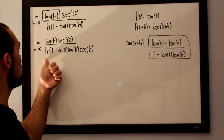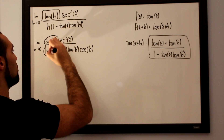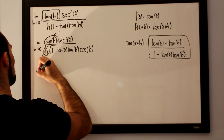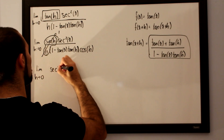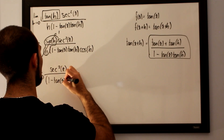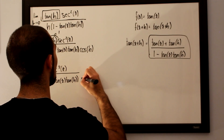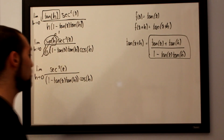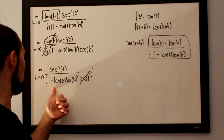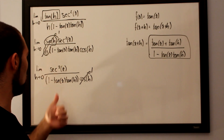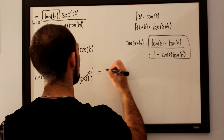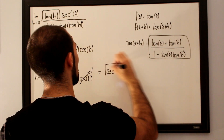Taking the limit as h approaches 0, I can see that sine of h over h goes straight to 1. So all we are left with is the limit as h approaches 0 of sec²(x) divided by 1 minus tan(x)·tan(h)·cos(h). As h approaches 0, cos(h) becomes 1 and tan(h) becomes 0, so 1 minus 0 leaves us with 1 in the denominator. Therefore, the result is simply sec²(x), which is the derivative of tangent of x.